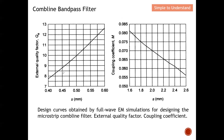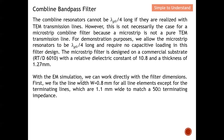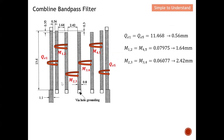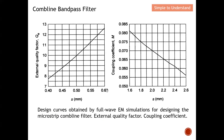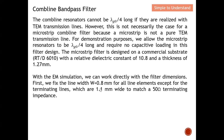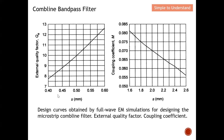Using EM simulation — as discussed in an earlier video on external quality factor and coupling coefficient — I will put the link below so you can understand how to obtain the values. We work directly with the filter dimensions. First, we fix the resonator width at 0.8 mm. For the input and output lines, we use 1.1 mm width to match the 50-ohm termination impedance.